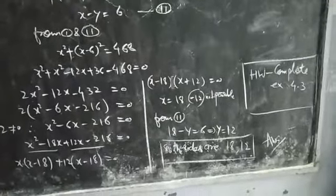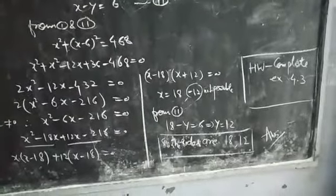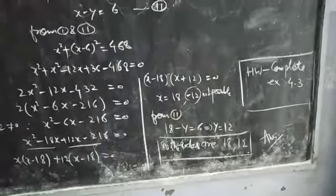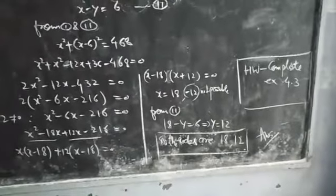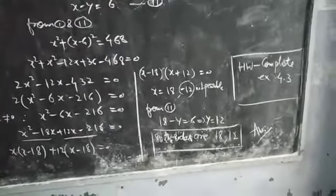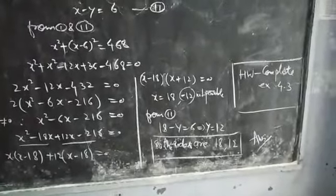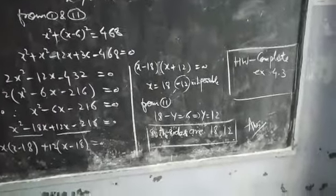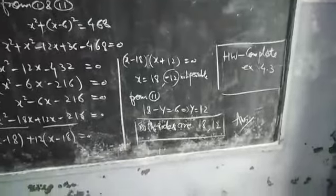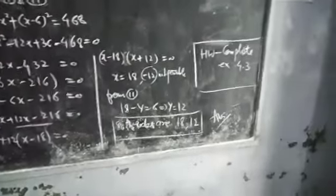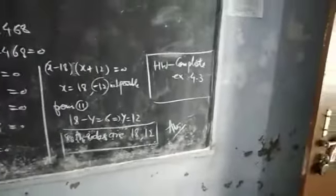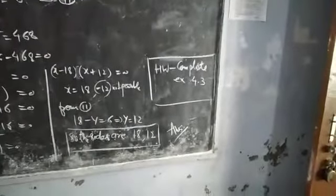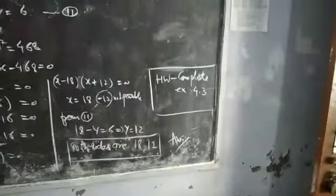From the second equation, 18 minus y = 6, that is y = 12. So the larger side of the square is 18 and the smaller side is 12. This is the answer to this question. All of you complete exercise 4.3. That's all for today.